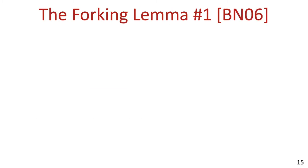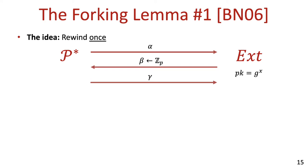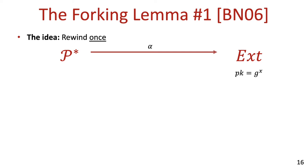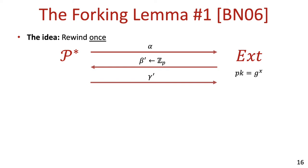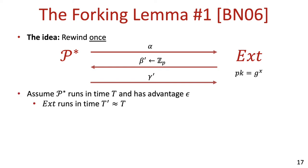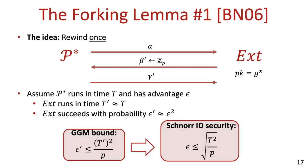Let's take a look at two variants of the forking lemma and how they encounter the square root barrier. The first is due to Bellare and Neven, and the idea here is to rewind the impersonator P* exactly once. The extractor first honestly interacts with P* to obtain the first transcript (alpha, beta, gamma), then rewinds P* to the point right after the first message alpha, samples a fresh challenge beta prime, sends it to P*, and obtains a second transcript (alpha, beta prime, gamma prime). Bellare and Neven proved that if P* breaks the security of the scheme with probability epsilon, then the extractor succeeds with probability about epsilon squared. The GGM bound for the D-log problem implies that the advantage epsilon of P* is bounded by the square root of t squared over p, so we encounter the square root loss.